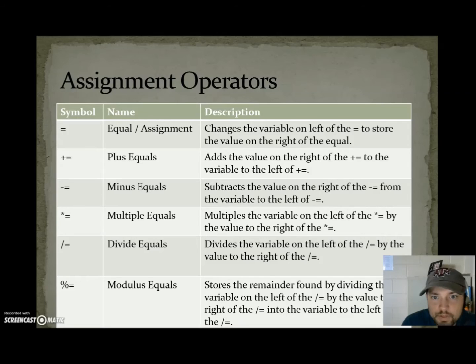Assignment operators. Equal changes the variable on the left of the equal to store the value on the right of the equal. Plus equals adds the value on the right of the plus equals to the variable on the left of the plus equals. Minus equals subtracts the value on the right of the minus equals from the variable on the left of the minus equals. We're going to see an example of these, so if it doesn't make a whole lot of sense, it should once we do our examples. Multiply equals multiplies the variable on the left of the multiply equals by the value on the right of the multiply equals. Divide equals divides the variable on the left of the divide equals by the value on the right of the divide equals. Modulus equals stores the remainder found by dividing the variable on the left of the modulus equals by the value on the right of the modulus equals, and it all gets stored into the variable on the left.